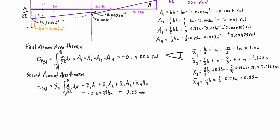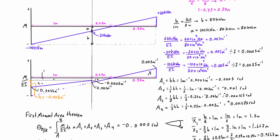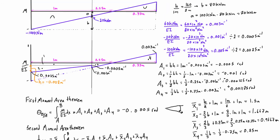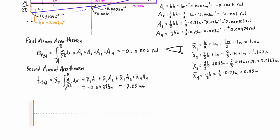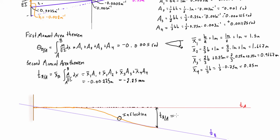Now we draw the actual deflected structure. From the moment diagram, the negative area regions are concave down and positive area is concave up, with an inflection point at 1.25 meters. The deflected shape must come out horizontal from the fixed connection. Drawing the tangents at points A and B, the tangential deviation is the vertical separation of the tangents at point B — this equals YB, the actual deflection of the structure at point B.